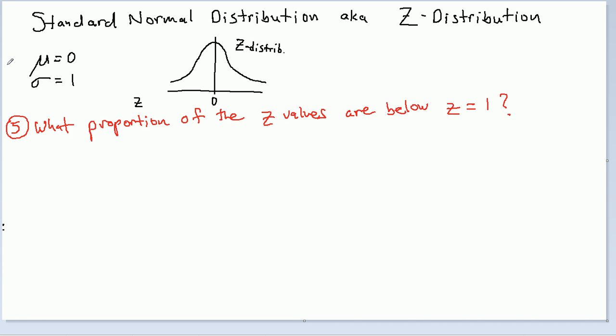We're going to look at one last example of these situations where you're asked for the proportion or percentage of Z values below a number, between numbers, above numbers, and so on. In this latest rendition, we have, what proportion of the Z values are below Z equals 1?